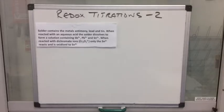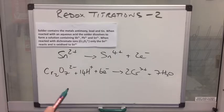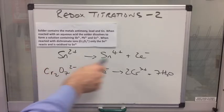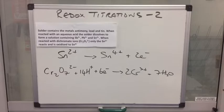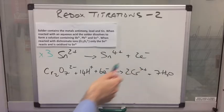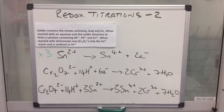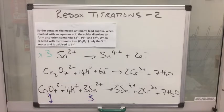The first thing we're going to do is write the half equations for those two processes. We need to combine them to make the overall redox equation. There are two electrons involved in the oxidation and six in the reduction, so we multiply the oxidation half equation by three so both sides equal six electrons and they cancel out. The important thing from this equation is the one-to-three mole ratio between those two ions.